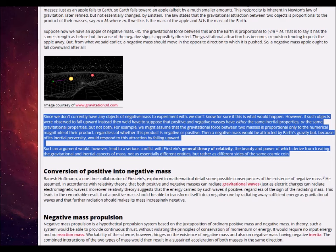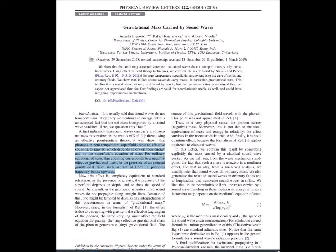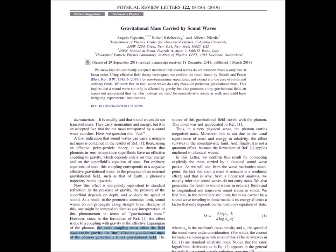We can see strong evidence that repulsive or negative gravity is indeed a real phenomenon. The question is can we harness this aspect of gravity or mass in any practical way? In previous videos we were introduced to the recent discovery that sound waves actually carry gravitational mass — and what's even more astonishing is that this mass is negative. A 2019 article from the department of theoretical physics at Columbia University states that phonons in zero-temperature superfluids have an effective coupling to gravity which depends solely on their energy and on the superfluid's equation of state. For ordinary equations of state, this coupling corresponds to a negative effective gravitational mass.